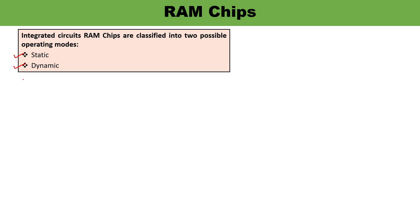The second type of memory is dynamic memory. Dynamic memory uses capacitors to store the binary information, and the binary information is stored in the form of charges. Capacitors are provided inside the chip by MOS transistors. The stored charge on the capacitors tends to discharge with time, and the capacitors must be periodically recharged by refreshing the dynamic memory. Refreshing is done by cycling.